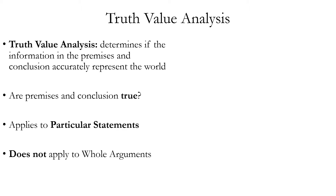Truth Value Analysis determines if the information in premises and conclusion is true, i.e. whether it accurately represents the world. Truth Value Analysis asks the question: are premises and conclusion true? It applies not to the whole argument, but rather to particular statements. So it's incorrect to say an argument is true or false; it's correct to say an individual statement in an argument is true or is false.